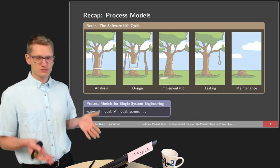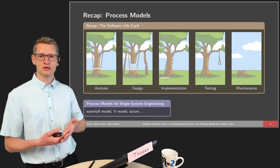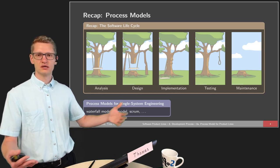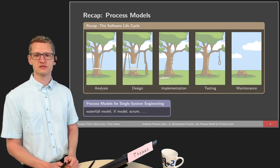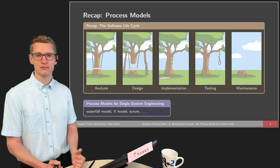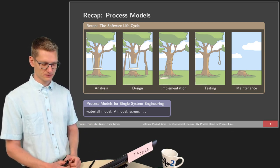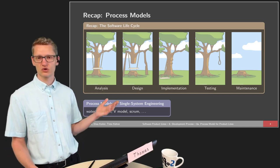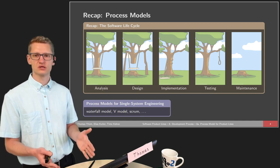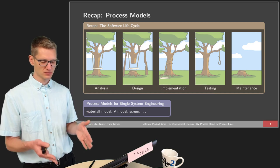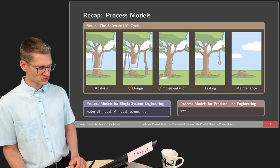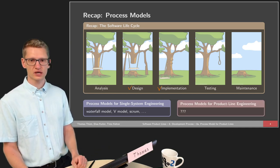Process models give us a strategy for how to do all those phases and how to connect them. In single system engineering, there's a multitude of different process models — for instance, the waterfall model, the V model, or Scrum. But the point is they are not focusing on product lines; they are not dedicated to the reuse that we want. So the question is, how do process models for product lines look like?